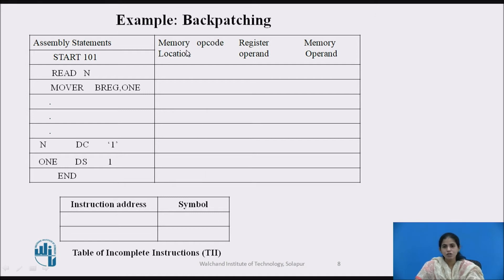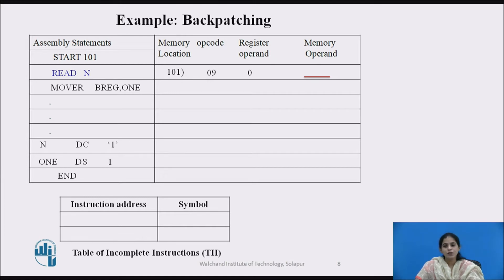We build the TI table with two fields: instruction address and symbol. The machine code table has fields: memory location, opcode, register operand, and memory operand. Processing the first instruction READ N: memory location is 101, opcode for READ is 09, register operand is 0. N is a forward reference symbol — we don't know its address, so we leave it blank and enter it into the TI table with instruction address 101 and symbol N.